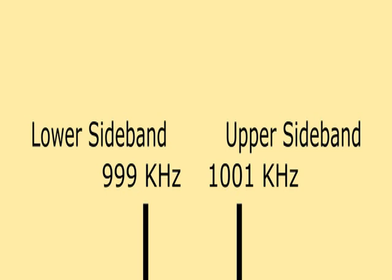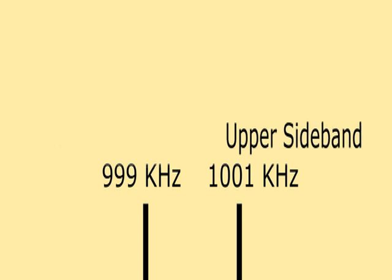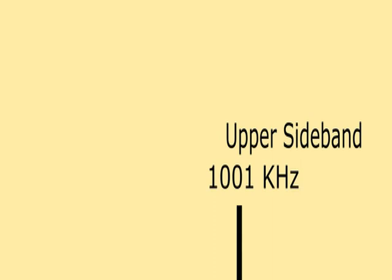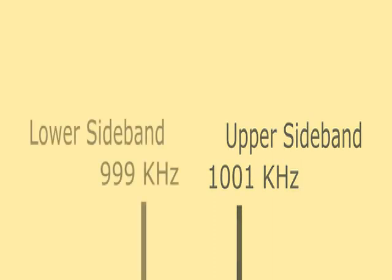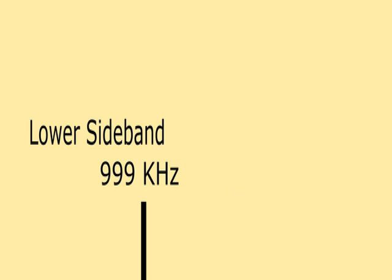But although they contain voice information, they both contain identical data. So you can as well suppress one of the sidebands, either the lower sideband, 999 kHz, or the upper sideband, 1001 kHz, and still be conveying the voice information.